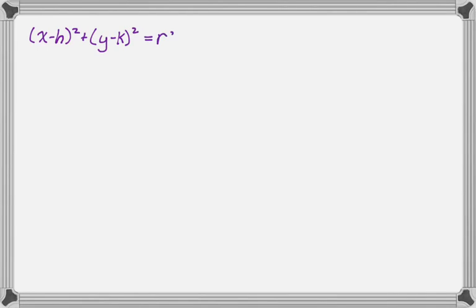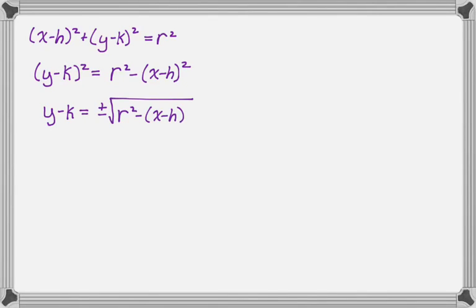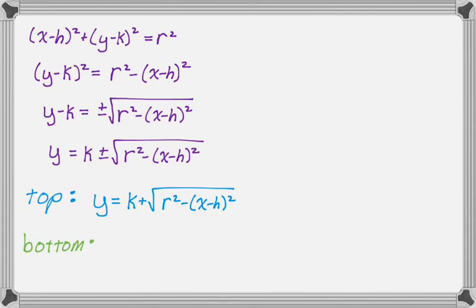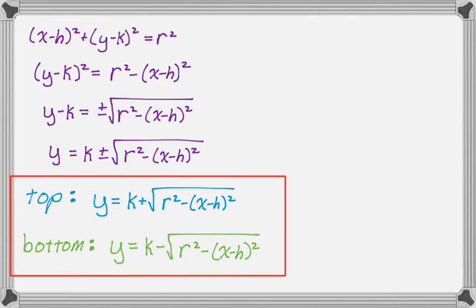Now I'm going to do it in general to get something some of you might eventually memorize, though it's okay if you don't — as long as you know the equation of a circle, you can manipulate it. Starting with the general equation, solve for y: move the x quantity to the other side, take plus or minus square root, then add k to both sides. The top semicircle uses the plus — y equals k plus the square root of r squared minus the quantity x minus h squared — and the bottom uses the minus: y equals k minus that same radical. If you want the top, use plus; if you want the bottom, use minus.